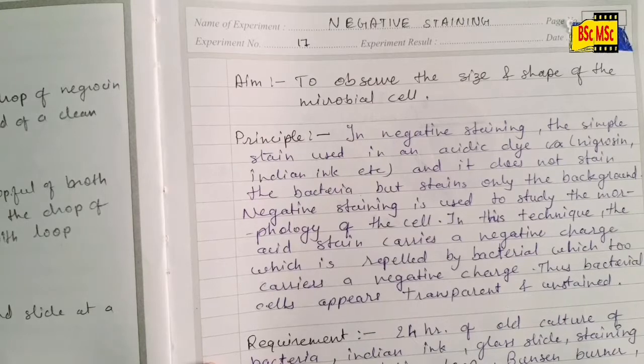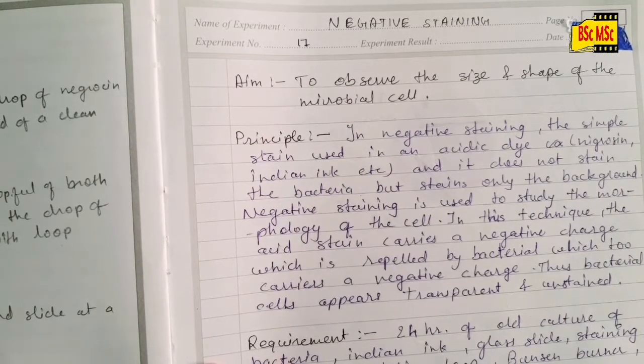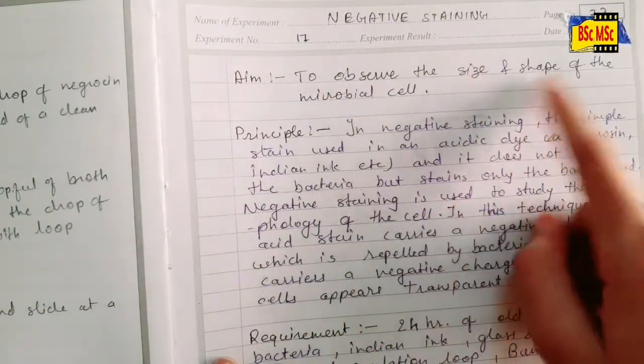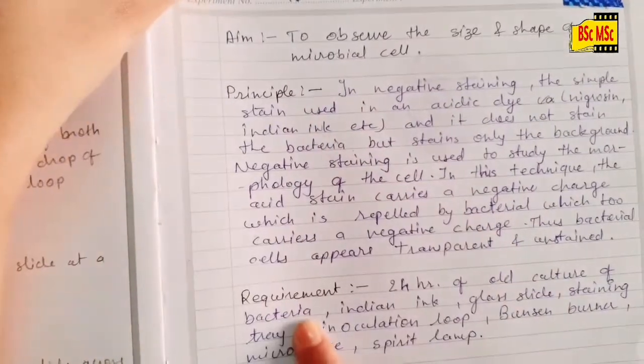Hello, today's topic is negative staining. To write this experiment in your practical record, first you need to write the aim: to observe the size and shape of the microbial cell, then principle, requirement, procedure, observation, and result.